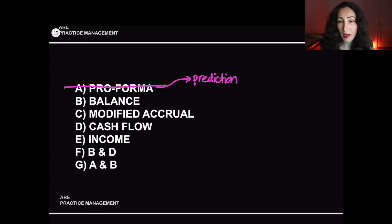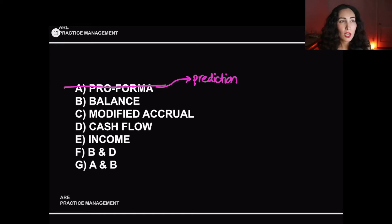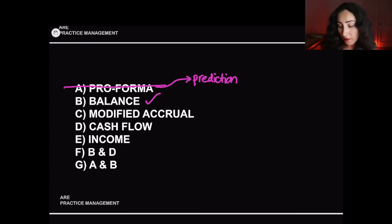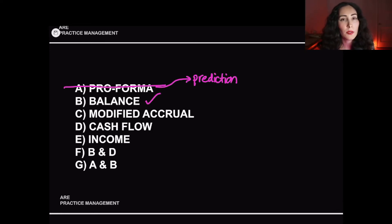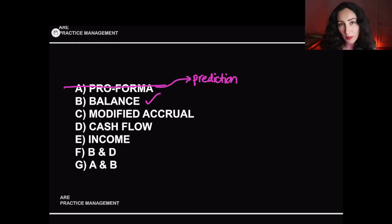Balance sheet: the $100,000 from the architect's savings — is that an asset, a liability, or equity? The $100,000 would definitely show up on the balance sheet because $100,000 cash is an asset. We'll put a check mark there. Modified accrual is actually an accounting method — a way of handling your money. It's not a statement, so that is not part of the answer.